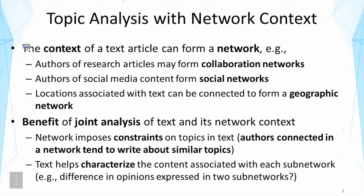There is benefit in jointly analyzing text and its network context because the network imposes constraints on topics in text. For example, it's reasonable to assume authors connected in a collaboration network tend to write about similar topics. Such heuristics can guide us in analyzing topics. Text also helps characterize the content associated with each subnetwork. Both kinds of data, the network and text, can help each other. For example, the difference in opinions expressed in two subnetworks can be revealed by doing this kind of joint analysis.